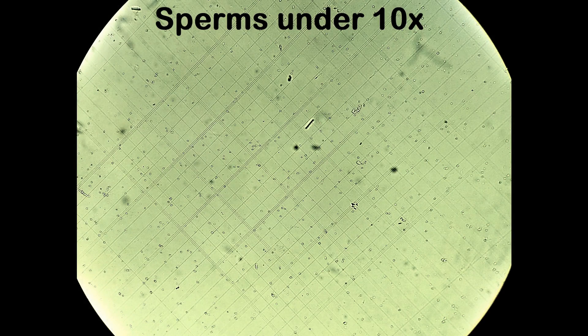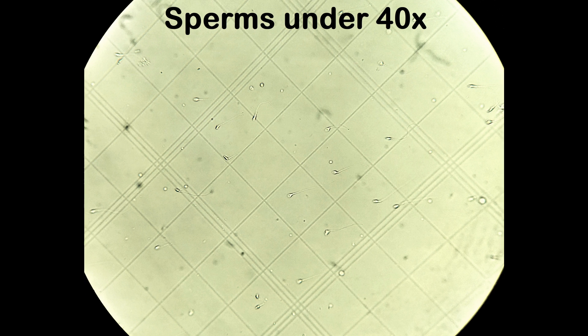You can also check out my video on the hemocytometer — click on the link in the video screen and it will take you there. This is how sperm cells will appear within the small squares of the counting chamber. Repeat the counting process in the second counting grid of the counting chamber as well.